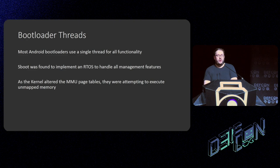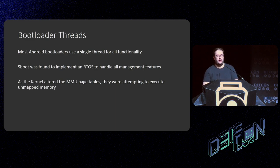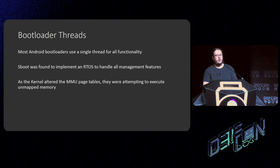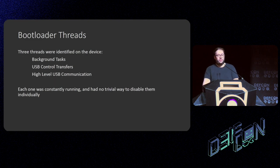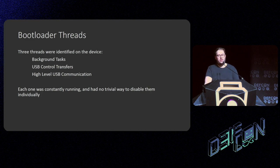Most Android bootloaders use a single thread for all functionality — they just want to get from start to loading Android and executing. However, S-Boot was found to implement an RTOS, which was much more fully featured and handled more complex graphics setup and fully featured debugging. There was a background process writing print statements into memory, which was nice. Because the kernel was altering the MMU page tables, they were trying to execute unmapped memory, causing hardware errors. Three threads were identified: background tasks, USB control transfers — what we were exploiting — and high-level USB communication (download mode, fastboot mode). As each was constantly polling for the next interrupt, that was causing the issue, and I felt there was no trivial way to disable them individually.